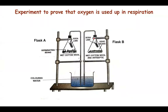The next experiment is to prove that oxygen is used up in respiration. We have two different flasks. In flask A, we have wet cotton wool on which some germinating bean seeds have been placed. In a small vial, we have soda lime hung from inside the conical flask. The flask is stoppered and a bent tube is inserted, with the other end dipped in a beaker containing colored water.